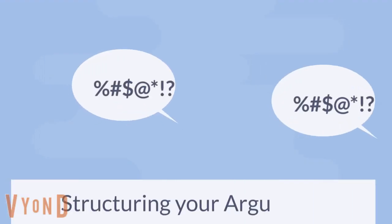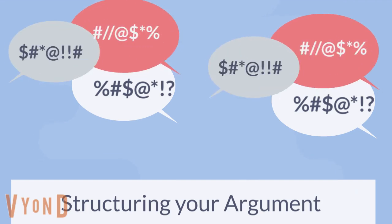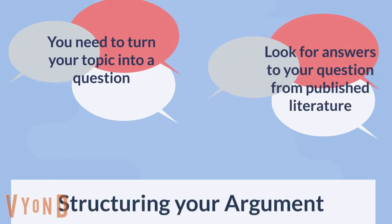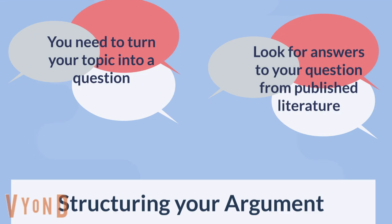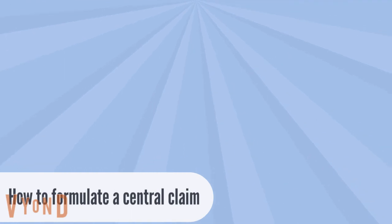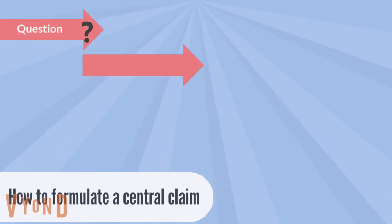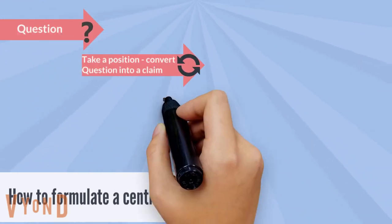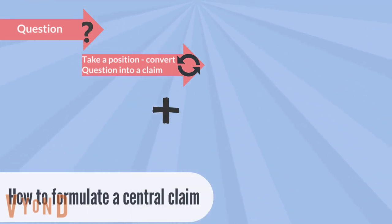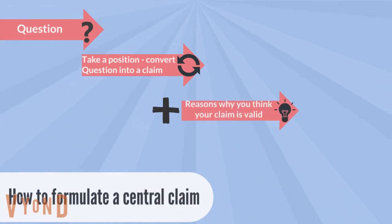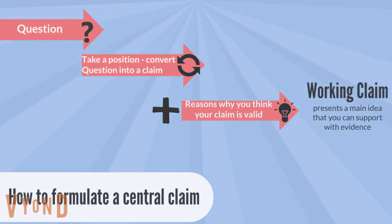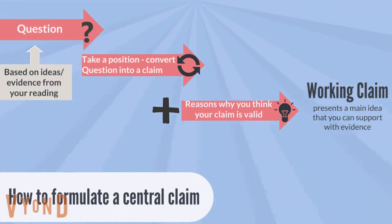How do we structure an argument? You need to turn your topic into a question and then look for answers to your question from published literature. First, you have your question. You then take a position and convert the question into a claim. Then you need to add your reasoning for why you think your claim is valid. That will produce a working claim that presents the main idea, which you can then support with evidence. Remember that your question is based on the ideas or the evidence from your readings.